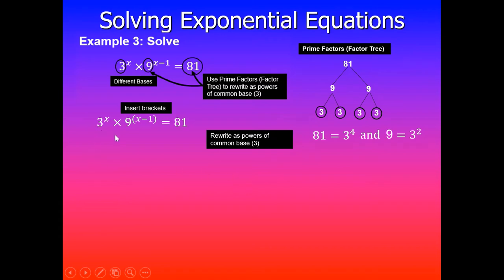So this one's already base 3. 9 has to be written as 3^2 as you can see here, and 81 will be rewritten as 3^4. So we'll quickly do that. So 3^x × (3^2)^(x-1) = 3^4, because 81 is now 3^4.